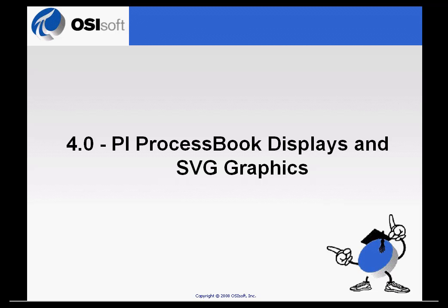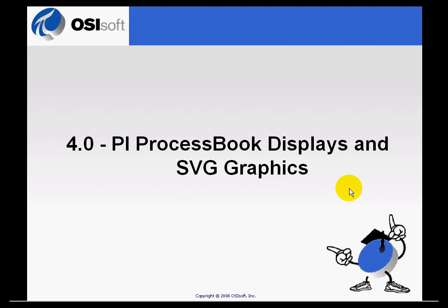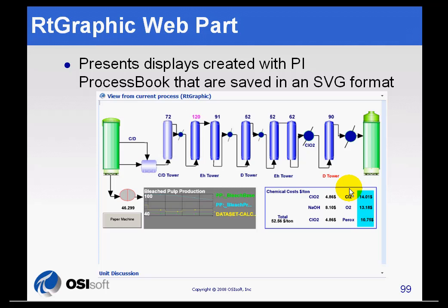In this chapter, we start discussing PI Process Book displays and how you would move those into a web environment. We are going to be talking about the SVG graphics that you would have to export them as, and the RT Graphics web part that we would use to host those SVG graphics.